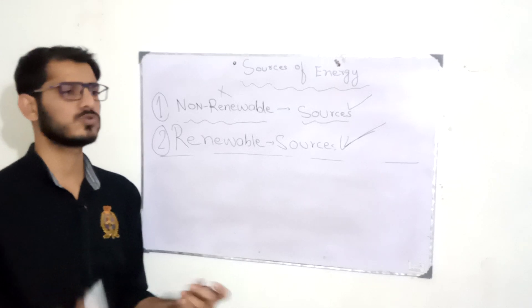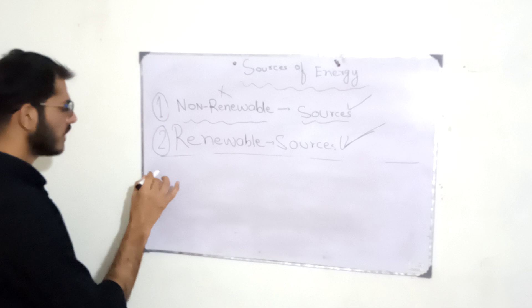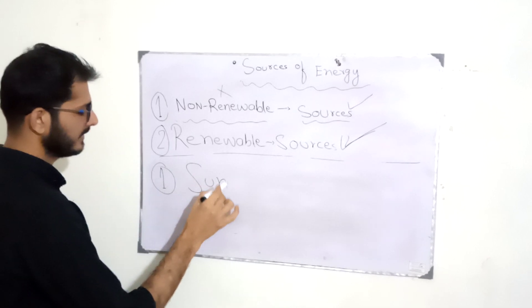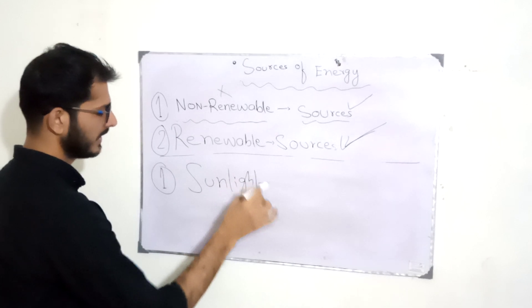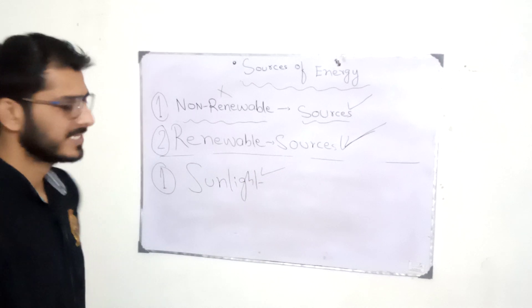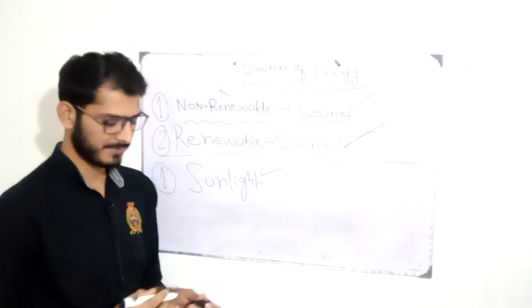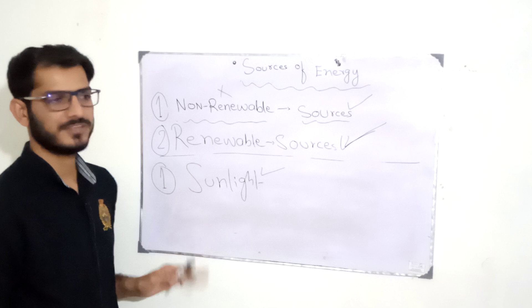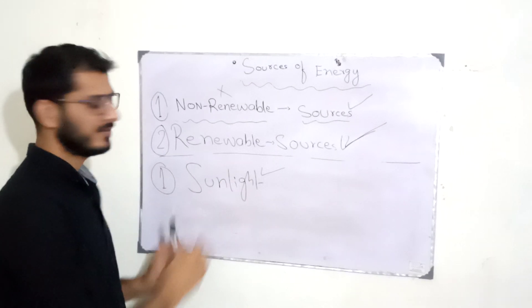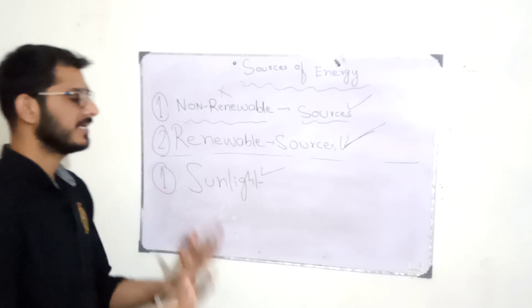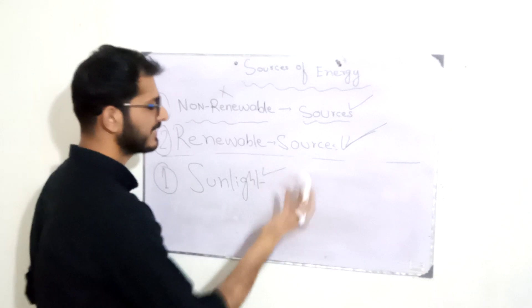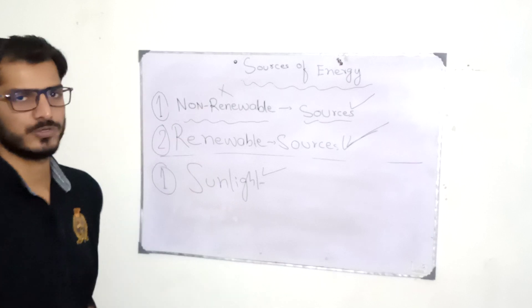The source of renewable energy is called sunlight. Sunlight is a renewable source of energy, like solar systems and solar panels. For example, China has launched the biggest solar project. Electricity and energy needs are shifting to solar. In Pakistan, there are many projects where panels are used with sunlight and solar plants, which can produce energy.